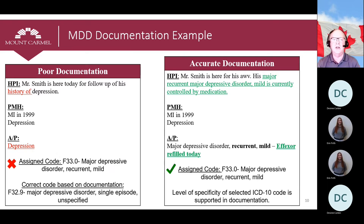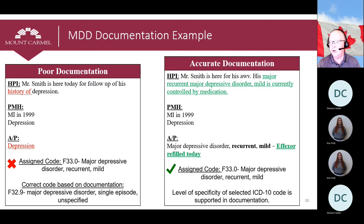Here we are comparing two examples of depression documentation using the same patient, Mr. Smith. Mr. Smith has a history of depression and is currently on Effexor. The poor documentation states that Mr. Smith has a history of depression, but doesn't note that he has a recurrent major depressive disorder, which is currently mild and controlled by medication — it just says history of depression. The assessment and plan simply lists depression. It is best to document 'major depressive disorder, recurrent, mild' and note that Effexor is refilled today. This gives an assigned code of F33.0 and meets all criteria necessary for HCC coding.